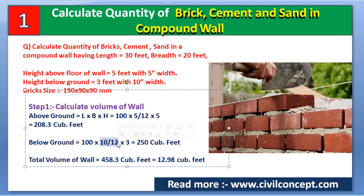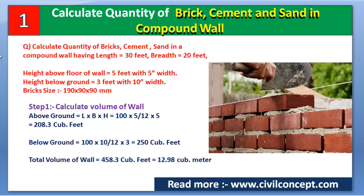For below ground: length is again 100 feet, width is 10 inches divided by 12, and height is 3 feet. Volume below ground = 100 × (10/12) × 3 = 250 cubic feet. Adding both: 208.3 + 250 = 458.3 cubic feet. Converting to cubic meters, we get 12.98 cubic meters — the total volume of the wall.